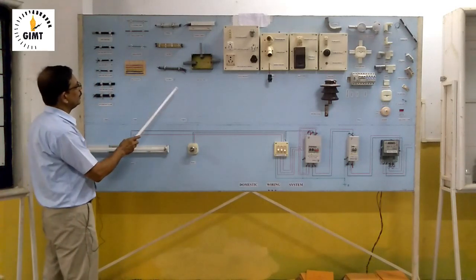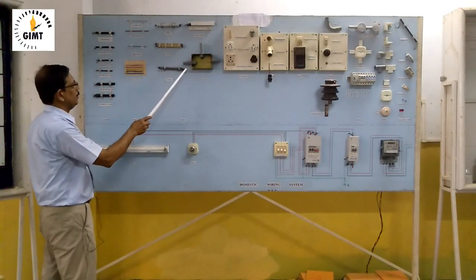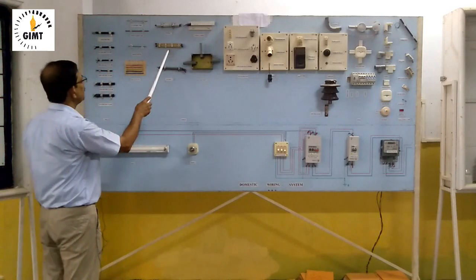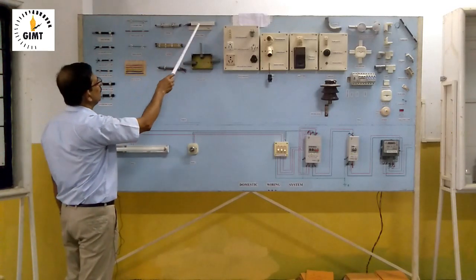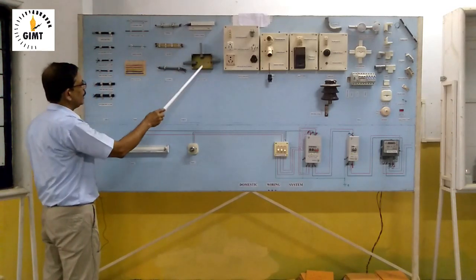Then come to the wiring. These are the types of wiring. This is flexible type, batten type, conduit type, casing capping, and concealed wiring.